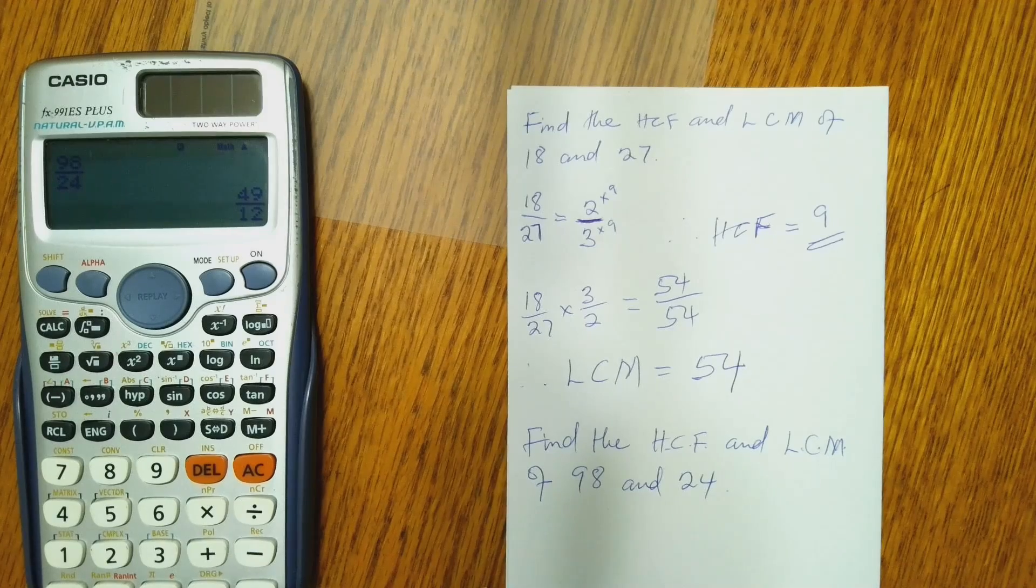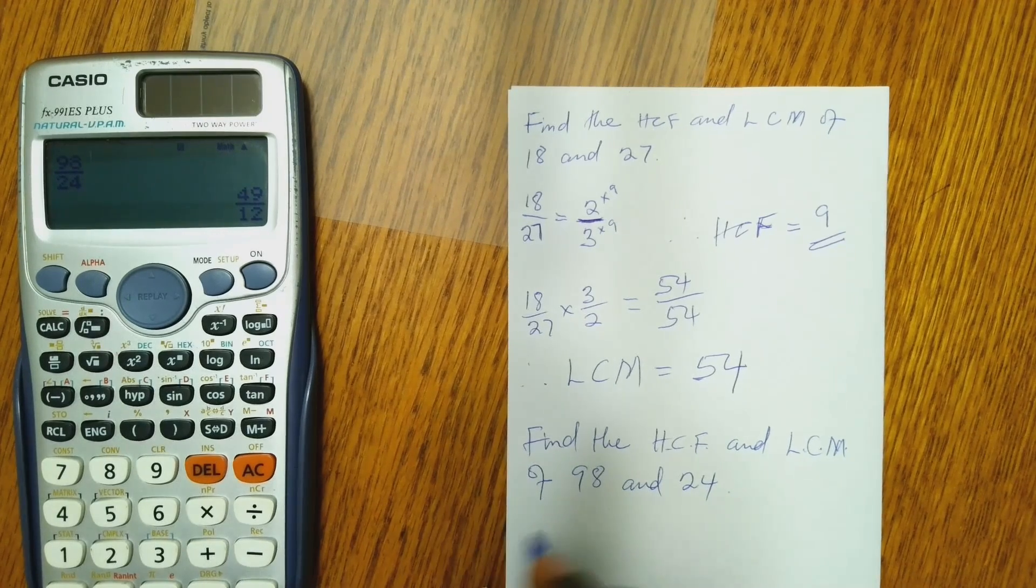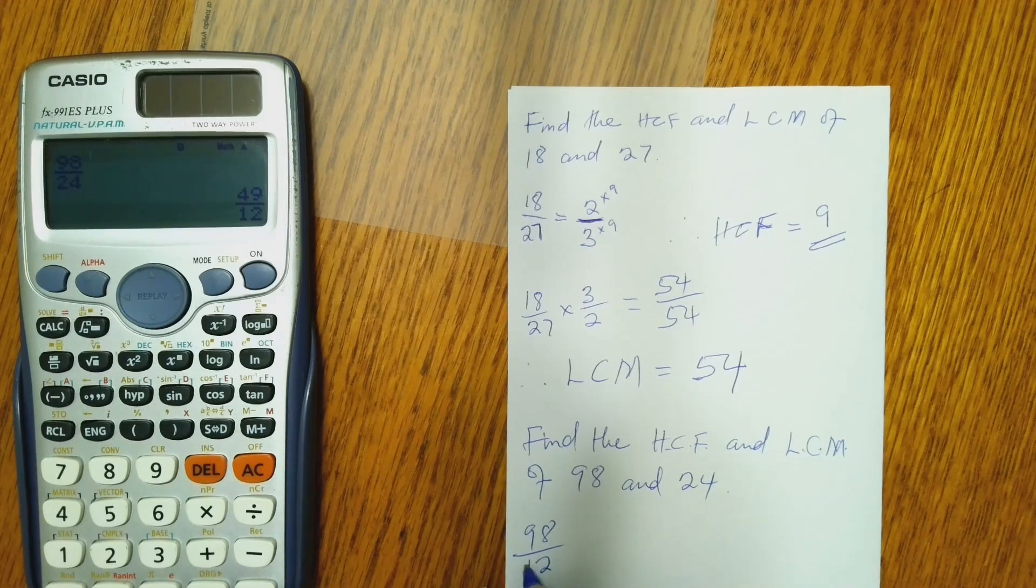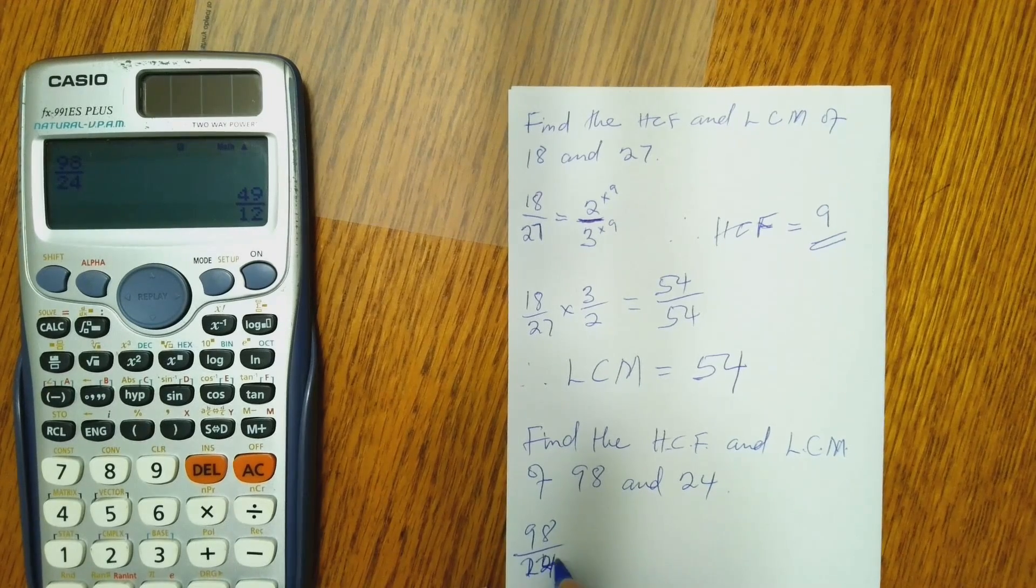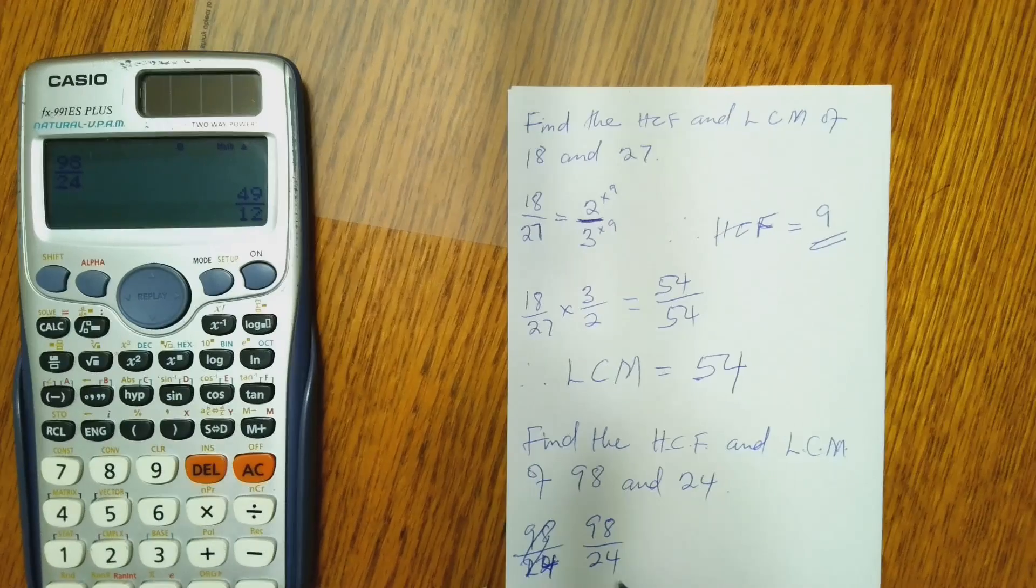And that gives us 49 over 12. So write that 98 over 24. Let me rewrite this. 98 over 24.